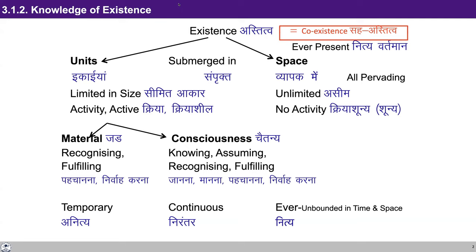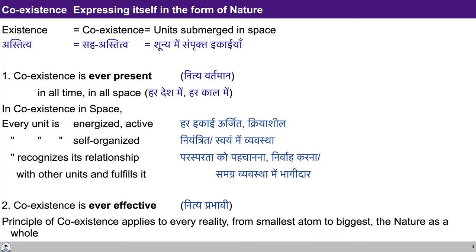We discussed in the previous lecture that the whole existence is there as units submerged in space. Units are limited in size, every unit is an activity in itself and active with other units. Space is unlimited in size and has no activity — it is all-pervading. This coexistence is ever present. The units are of two kinds: material and consciousness. Material units have activities of recognizing and fulfilling, while conscious units have knowing, assuming, recognizing, and fulfilling.